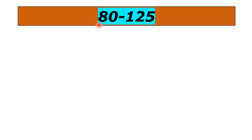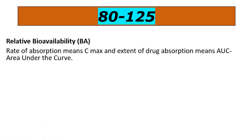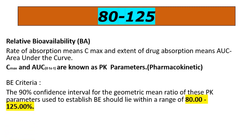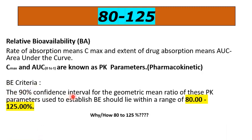You can see here, 80 and 125 is written — this is the basic criteria for bioequivalence studies. The relative bioavailability parameters are: rate of absorption (Cmax) and extent of drug absorption (AUC, area under the curve). The BE criteria is the 90% confidence interval of the geometric mean ratio of these PK parameters, which must lie within the range of 80 to 125.